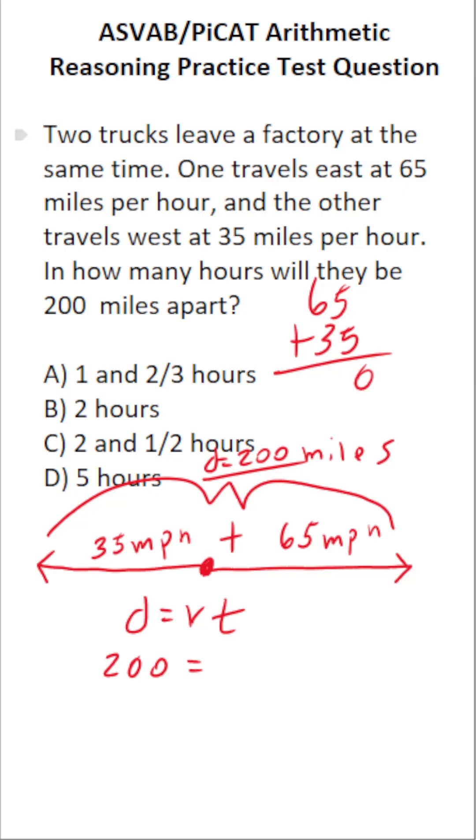If you can't do that mentally, do it off to the side. Five plus five is 10, bring down a zero, carry a one. Six plus four is 10. So they're traveling away from each other at a combined rate of 100 miles per hour.